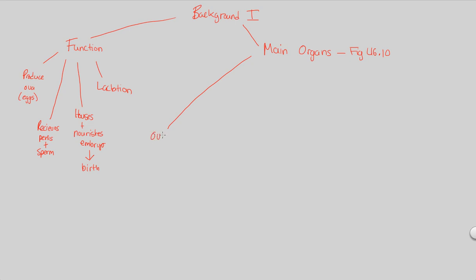The first organ is the ovary — the primary female gonad, essentially the female reproductive organ. Much like the testes are the primary male gonad, the female gonad is the ovary. Ovaries are also found in a pair within the female body, just like the testes. However, here comes a key difference: the ovary is found within the abdominal cavity — it is not found externally like the testes, which are wrapped within a scrotum to remain one to two degrees cooler than body temperature for spermatogenesis. Oogenesis works differently, and thus the ovary is an internal structure.